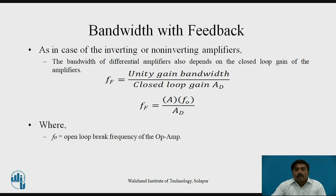The final parameter is bandwidth with feedback. As with inverting and non-inverting amplifiers, the bandwidth of the differential amplifier also depends on its closed-loop gain. The equation is: FF equals unity gain bandwidth divided by closed-loop gain Ad, where FF is the frequency with feedback. The unity gain bandwidth (UGB) equals A into F0, where F0 is the open-loop break frequency of the op-amp.